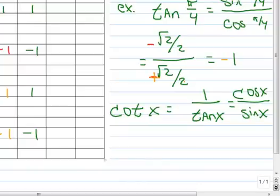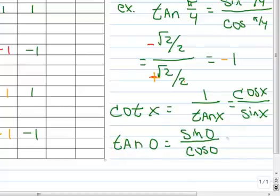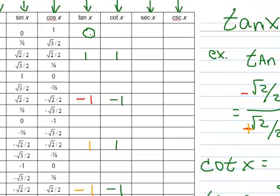Let's calculate the tangent of arc length 0. That's the sine of 0 over the cosine of 0. The sine of 0 is 0, and the cosine of 0 is 1, so 0 divided by 1 is 0 — the tangent of 0 is 0. Now skip down to pi over 2: here the sine and cosine are switched, so we'd have 1 over 0. You can't divide by 0, so the tangent of pi over 2 is undefined.